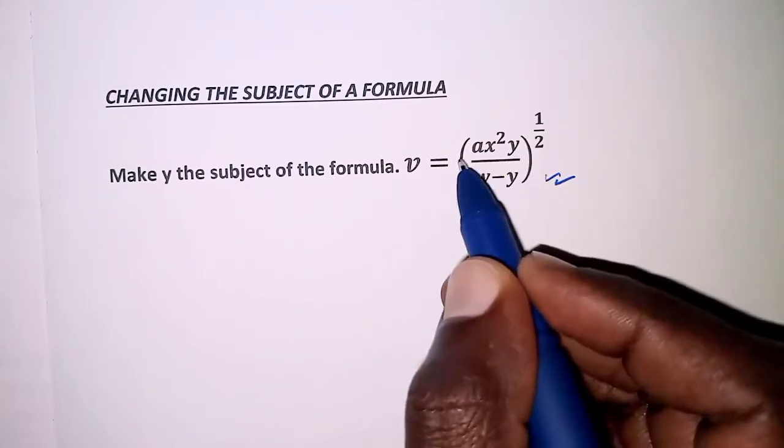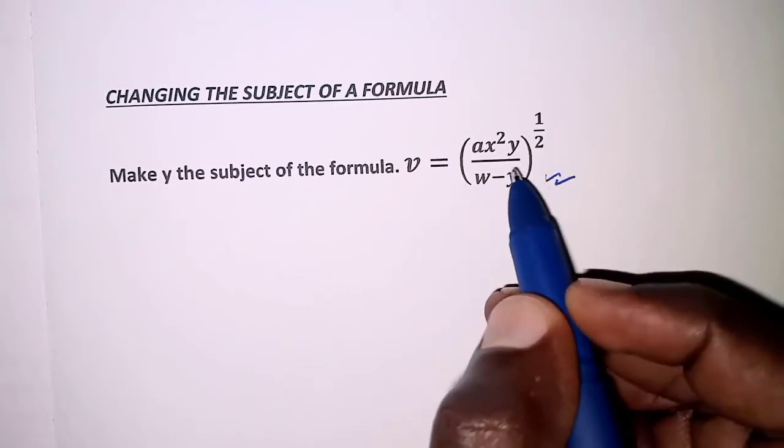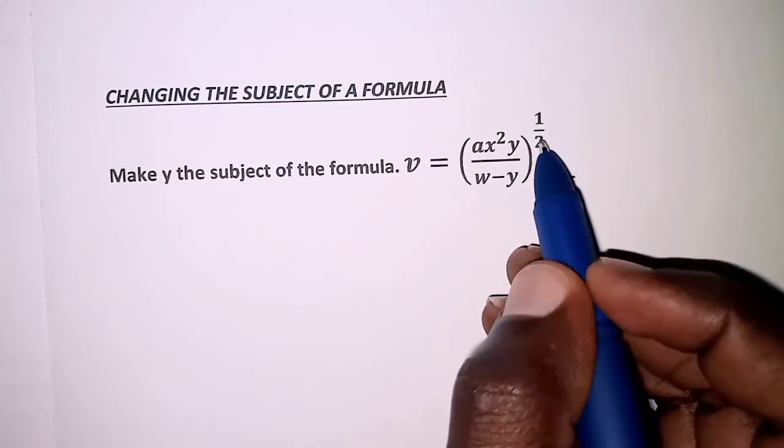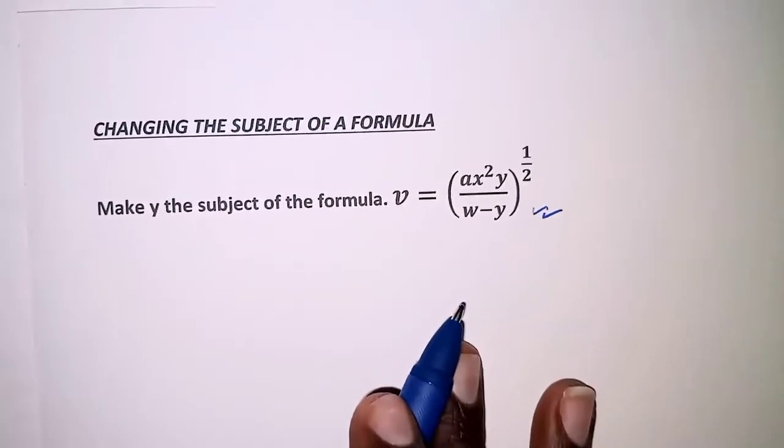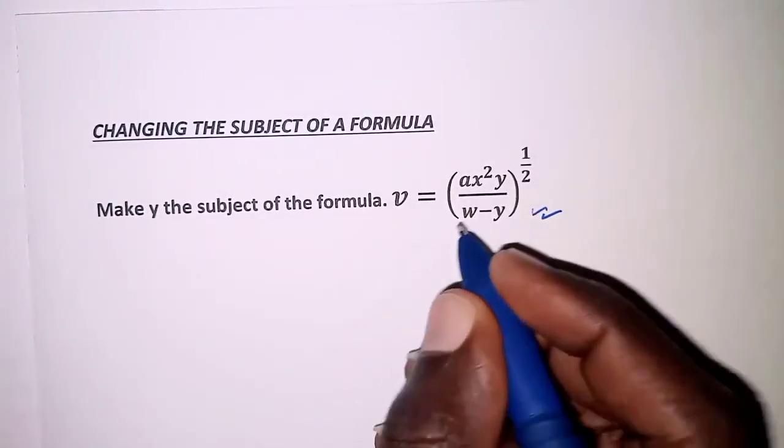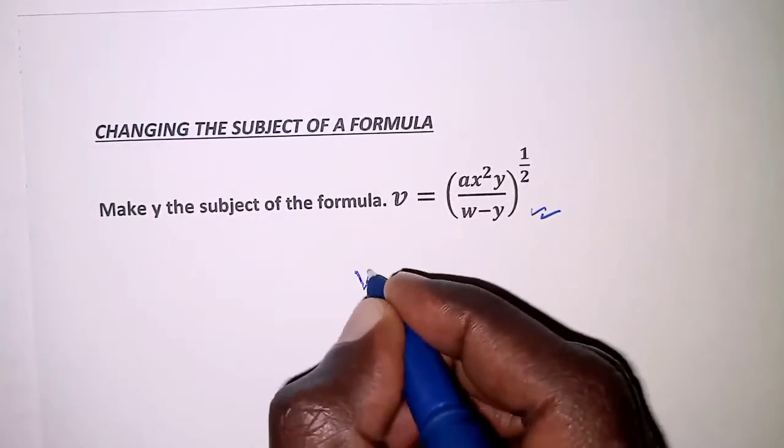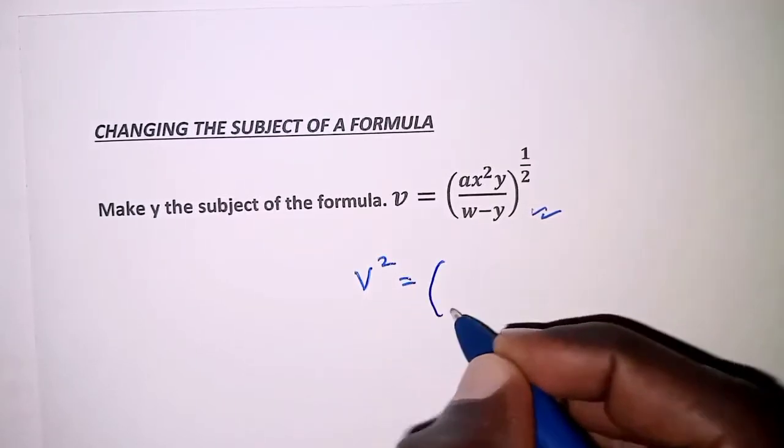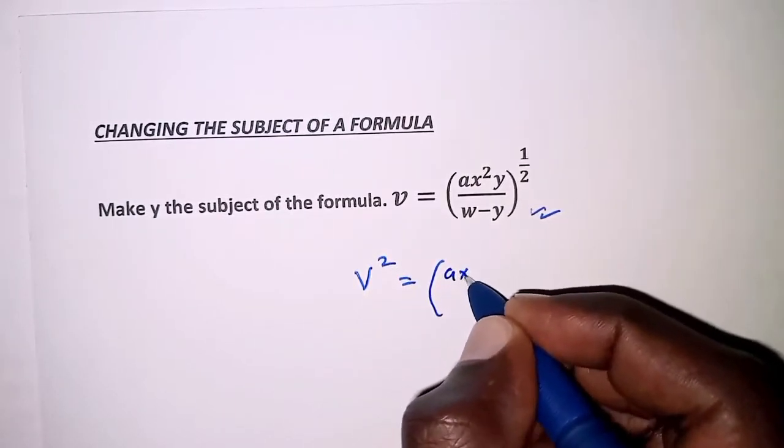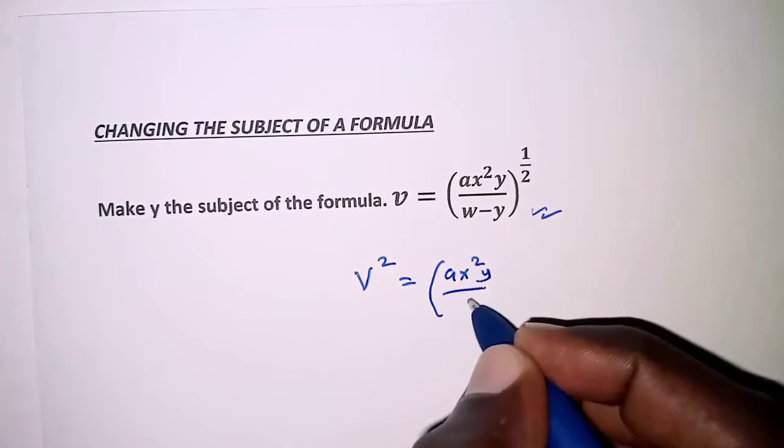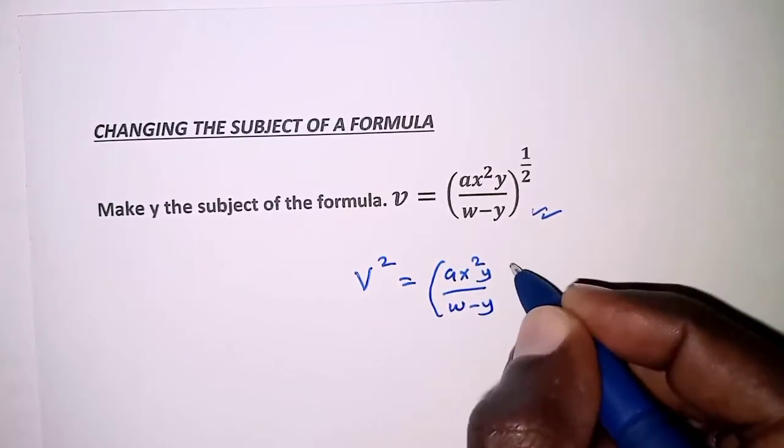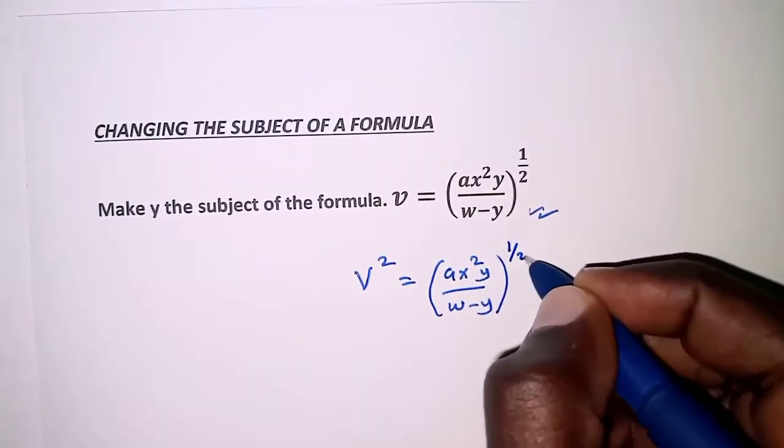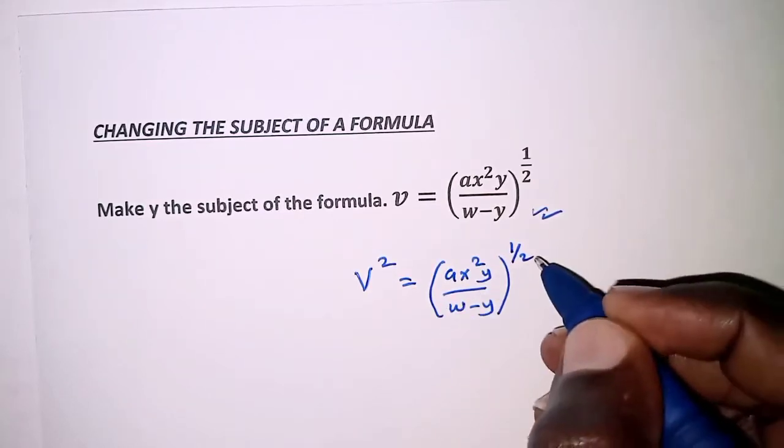We'll be able to achieve that by squaring both sides. So the left hand side squared we have V squared, and then on the right hand side we'll have ax squared Y over W minus Y power half, and squaring the right hand side...